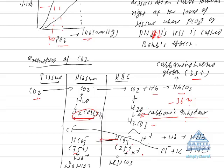The bicarbonate ion that diffuses into plasma associates with sodium ions to form sodium bicarbonate. The remaining 25% of bicarbonate combines with potassium inside RBCs to form potassium bicarbonate. So in the form of bicarbonate ion, sodium bicarbonate, and potassium bicarbonate, it accounts for about 70% of CO2 transport.